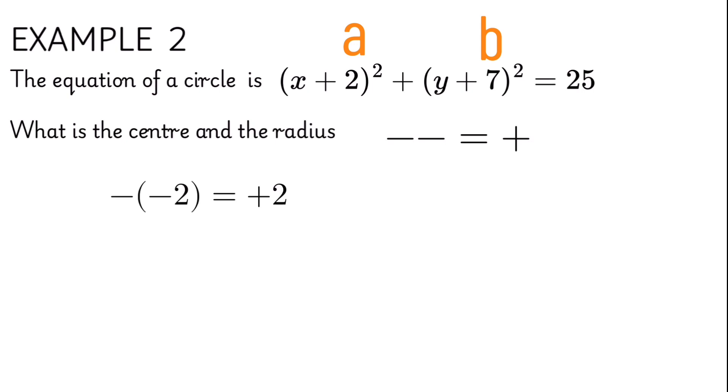So the A would have to be minus 2 and the B would have to be minus 7 to make a center of negative 2 comma negative 7. And the radius would just be square root of 25 which is equal to 5.